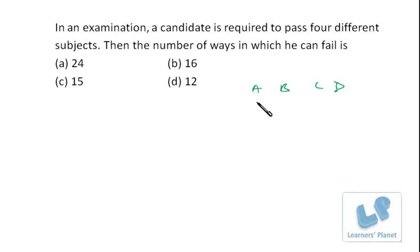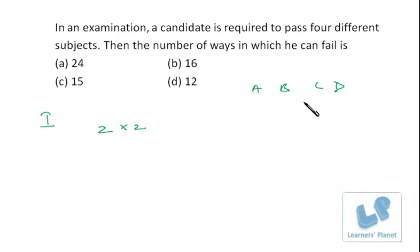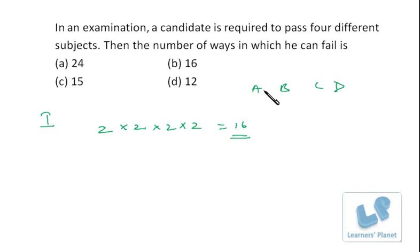The first method: for subject A he has two choices — pass or fail. For subject B, two choices. For C, two choices. For D, two choices. So the total number of ways is 2×2×2×2 = 16. But this 16 includes every case of pass or fail for each subject. There will be a single case when all four are passed, and we cannot count that as a failing case.